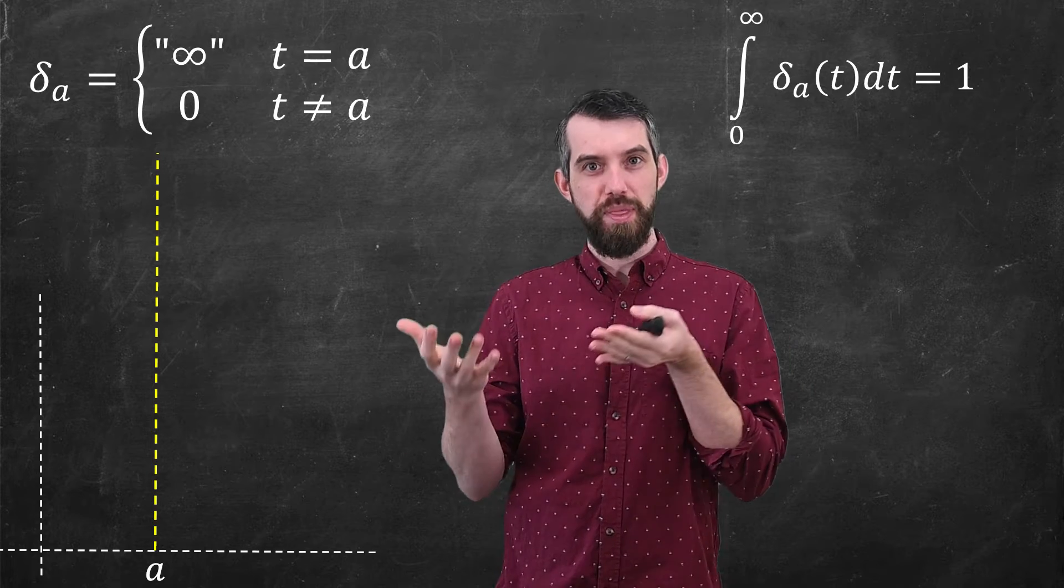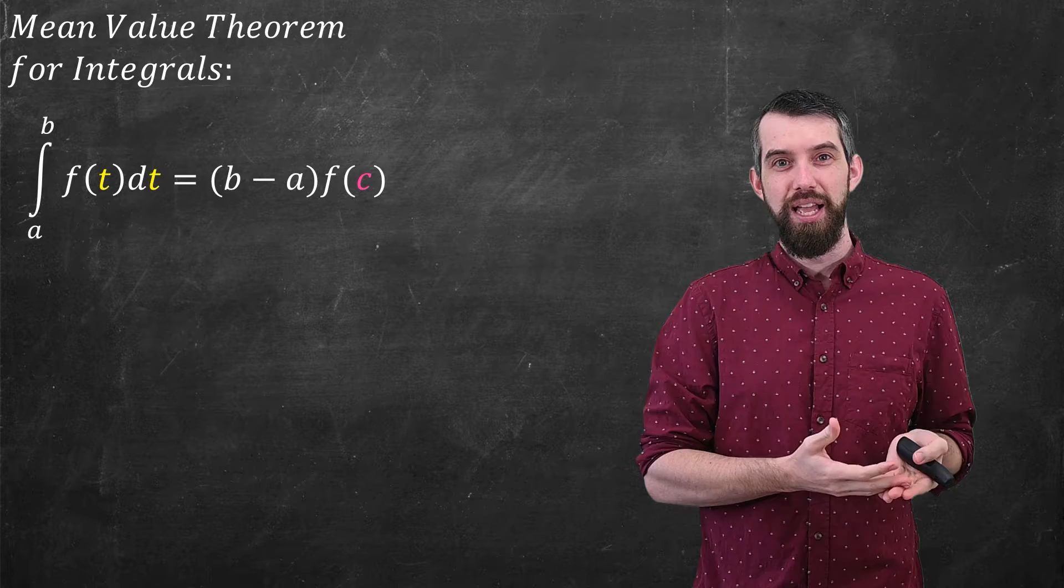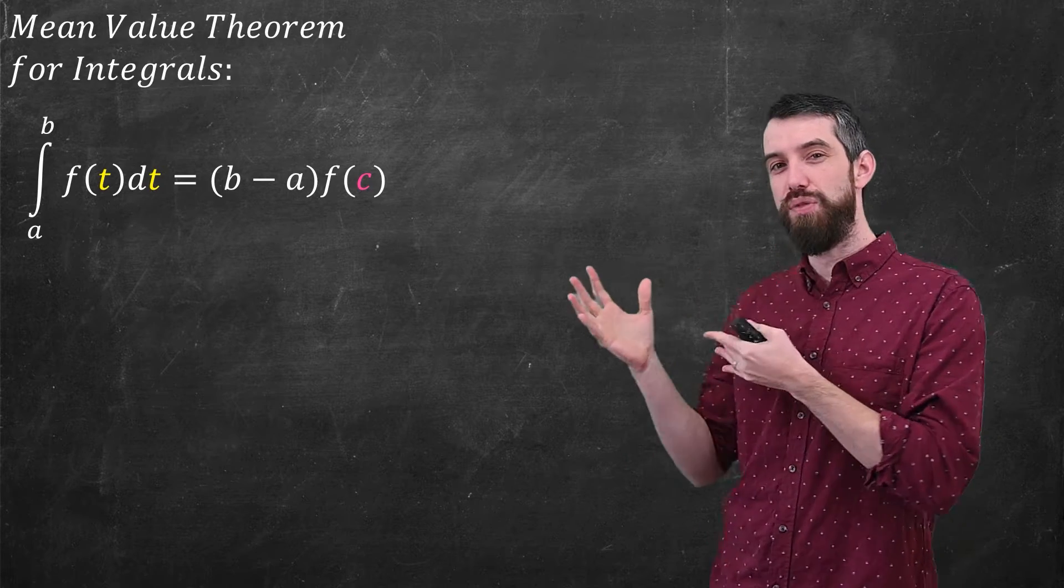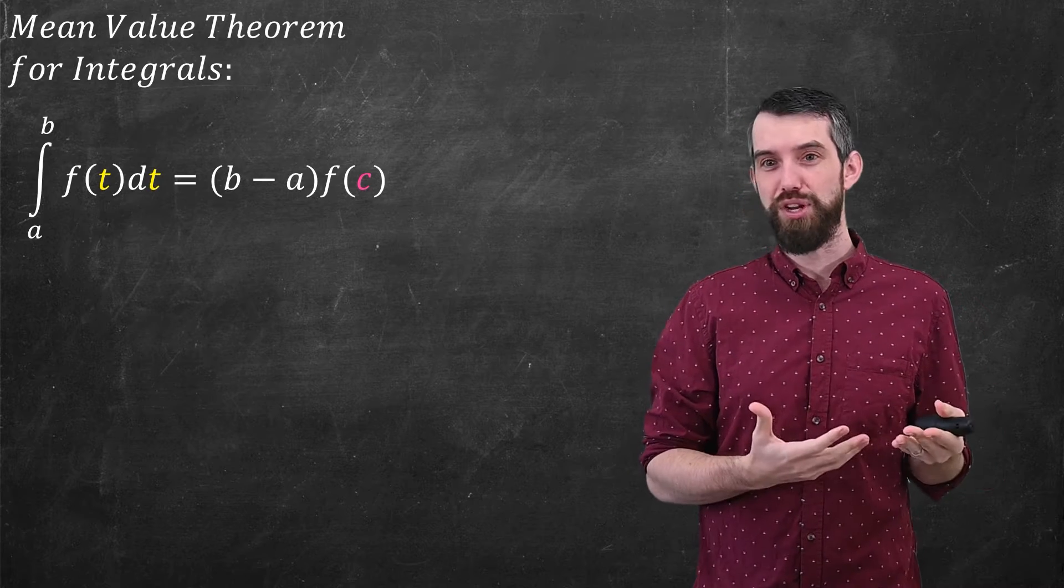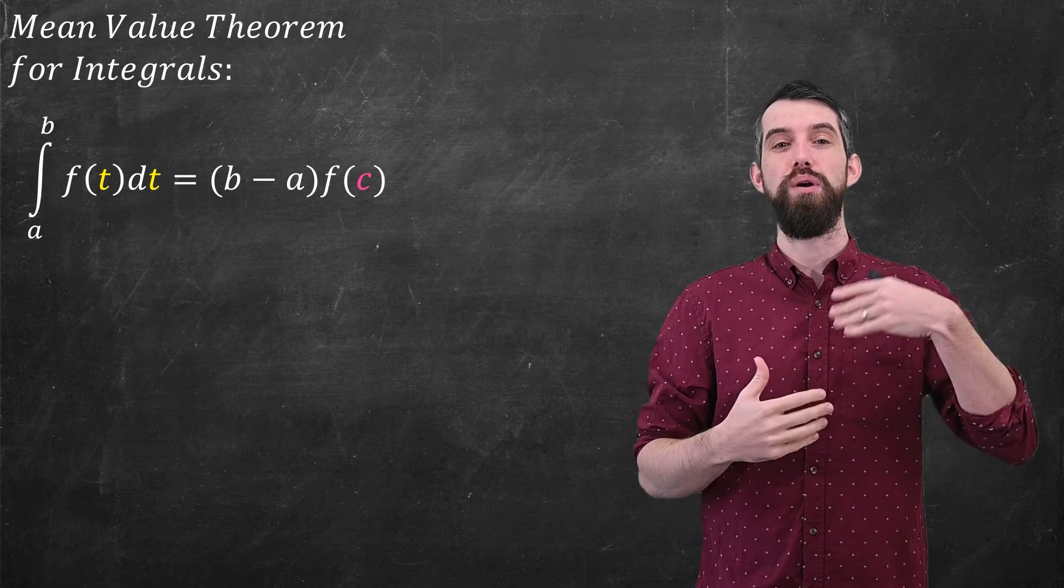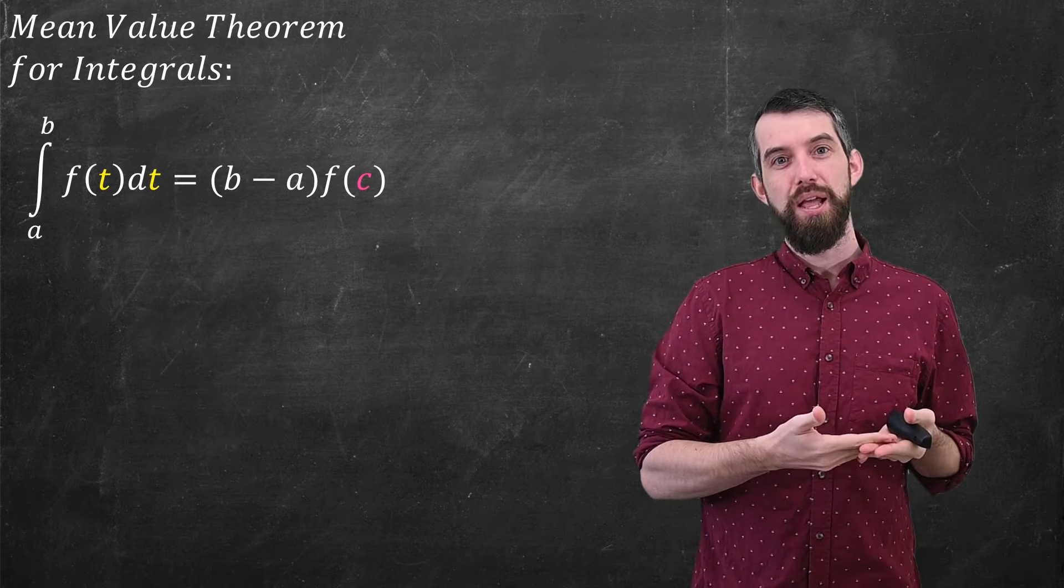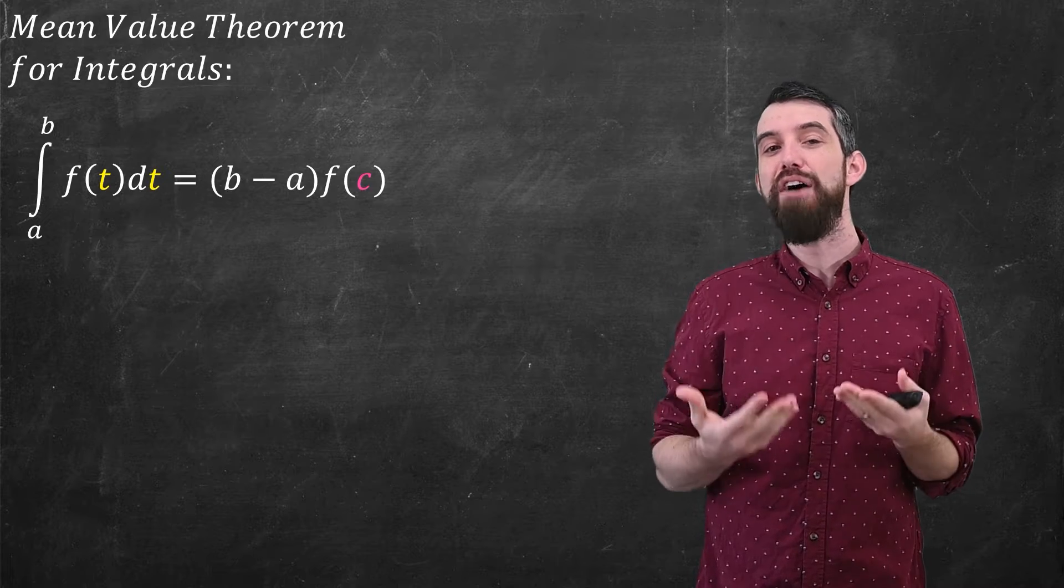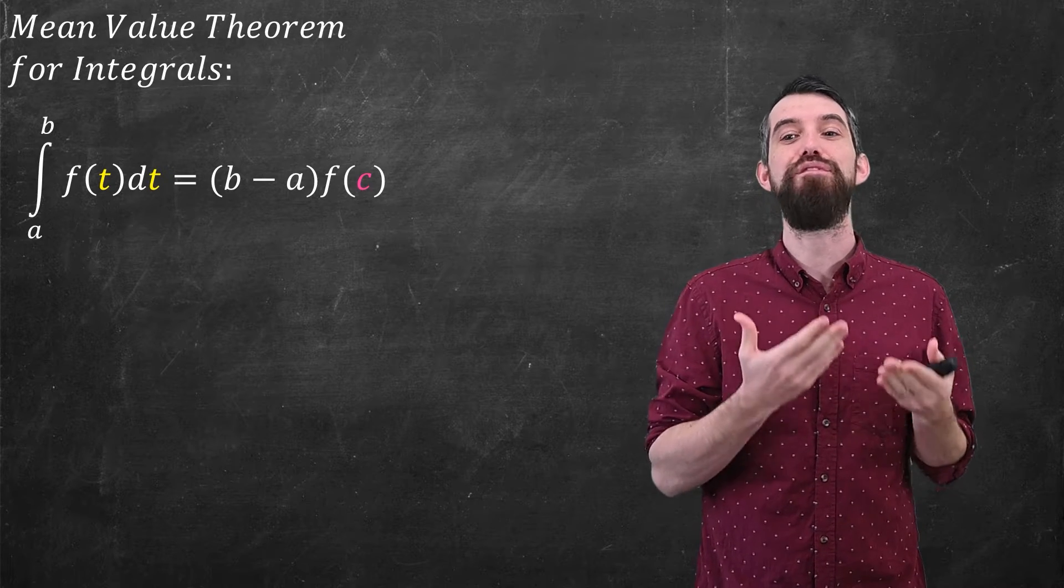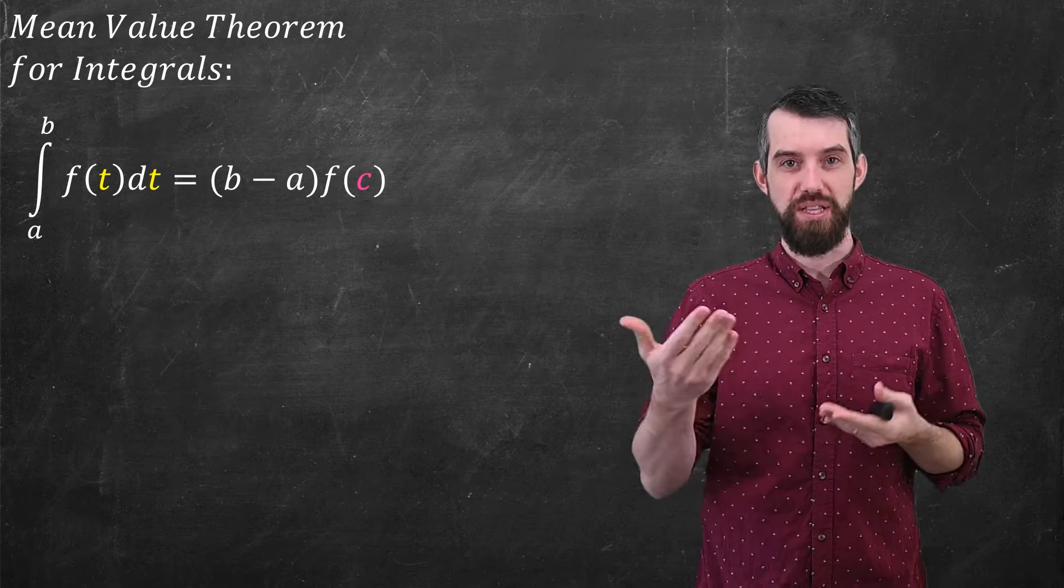Now, before I continue further with this delta function, I want to actually remind you of a theorem from first year calculus. This is the mean value theorem, not for derivatives, as it's most often stated in first year calculus, but the mean value theorem for integrals. The theorem goes as follows. If you integrate some function over some interval, then this is just equal to the height of the function f(c), where c is some value in between a and b, multiplied by this difference in the interval b minus a.